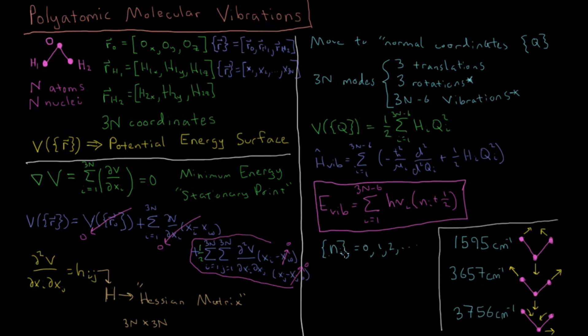And similarly, we have that these νi are equal to 1/(2π) times the square root of k, or in our case, Hi over μi. So there's some reduced mass for each mode. There's some spring constant for each mode, which we get from the eigenvalues of the Hessian matrix, which are the mixed second derivatives of the potential with respect to nuclear motion.